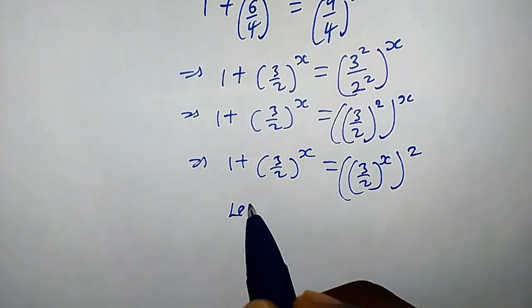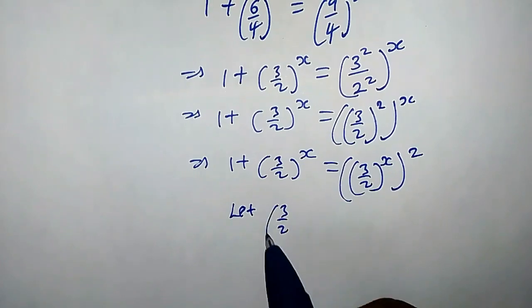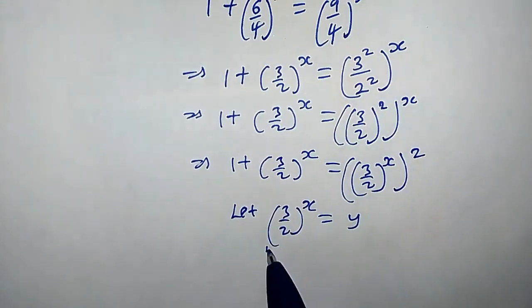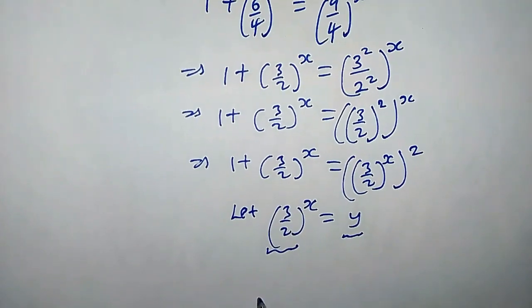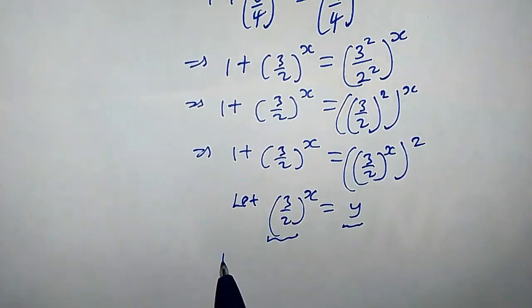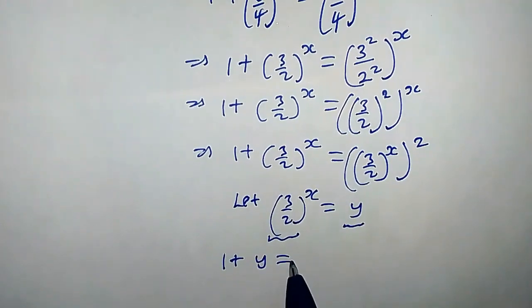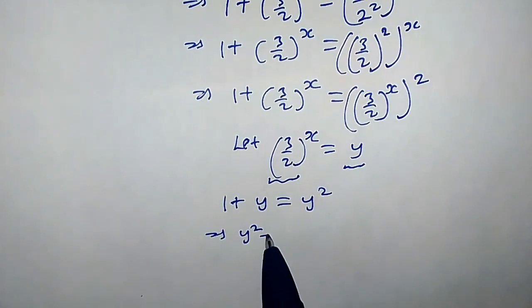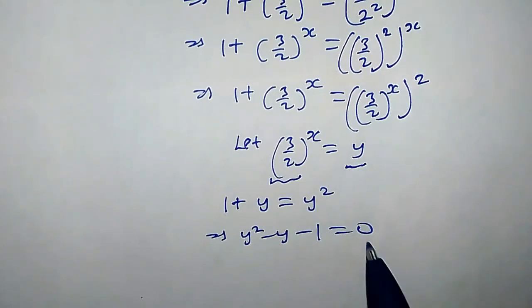Now, let's assume (3/2)^x equals y. That means anywhere we see this, we are going to replace it with y. So from here, we have 1 plus y equals y squared. Writing this as a quadratic equation, we have y² minus y minus 1 equals 0. But this is not factorable, so let's use the quadratic formula.